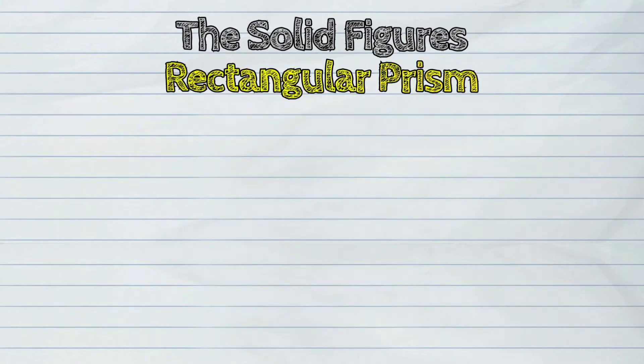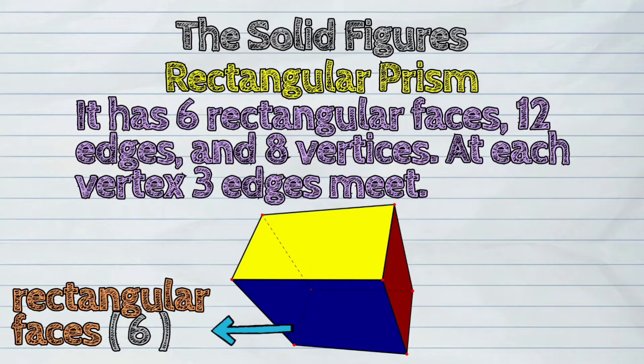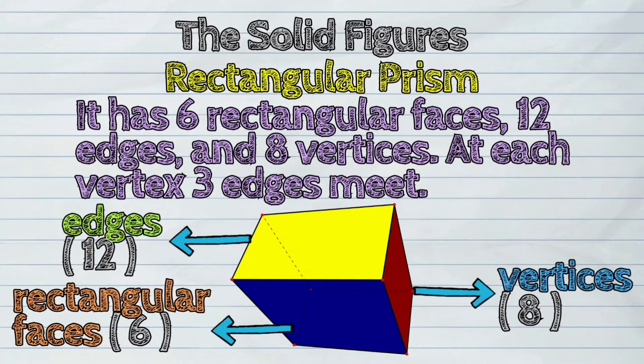Third, the rectangular prism. It has six rectangular faces, twelve edges and eight vertices. At each vertex, three edges meet.